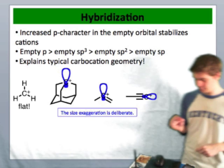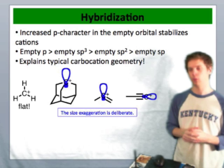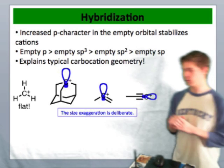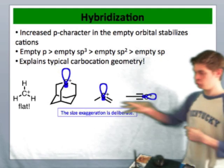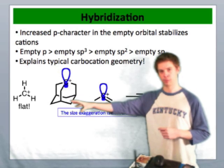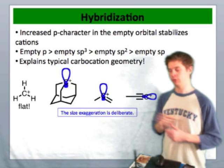But sometimes putting that empty orbital or making that empty orbital into a pure p orbital is just not possible. So consider the example of the adamantyl cations shown here. Because of the geometric constraints of this bottom ring, the carbon that's positively charged is unable to planarize.